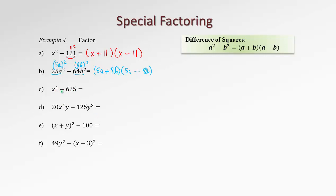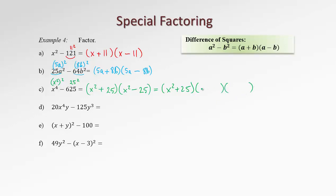In the next example, we again have a difference. x to the 4 can be considered as x squared, squared, and 625 is actually 25 squared. So we have a difference of two squares. Prepare two brackets, one with plus and one with minus, using x squared and 25 as the terms. But is it factored completely? The first bracket is a sum of squares, which is not factorable. However, the second bracket is still a difference of squares, so we factor it further into x plus 5 and x minus 5.